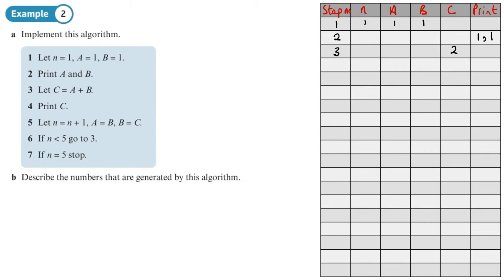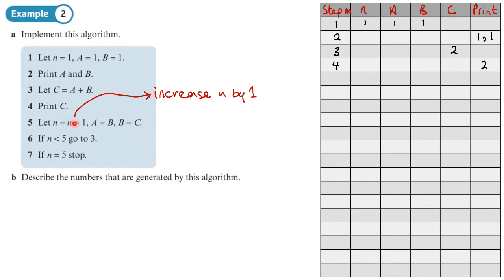Step four says print c, and c's value is two. Step five says let n equal n plus one — this means increase n by one, so whatever n was before we add one. The previous value of n was one, so the new value of n is now two.